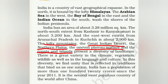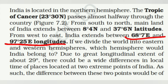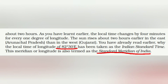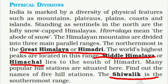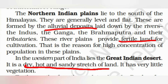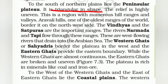Chapter 7 is about India's physical features: lofty mountains, the Great Indian Desert, northern plains, uneven plateau surface, coasts, and islands. India's standard meridian is 82 degrees 30 minutes East. Physical divisions include: the Great Himalayas (Himadri), the Middle Himalayas (Himachal), and the Shivalik as the southernmost range. The Northern Indian Plains lie south of the Himalayas with alluvial deposits providing fertile land — covering states like Uttar Pradesh.